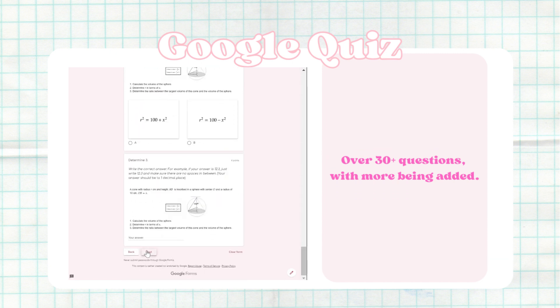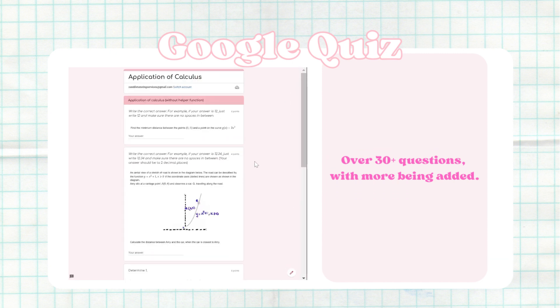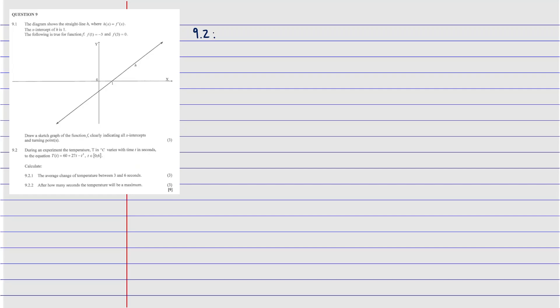The question says: during an experiment, the temperature in Celsius varies with time in seconds according to the equation T(t) = 60 + 27t − t³, and we are told that the time is between zero and six.